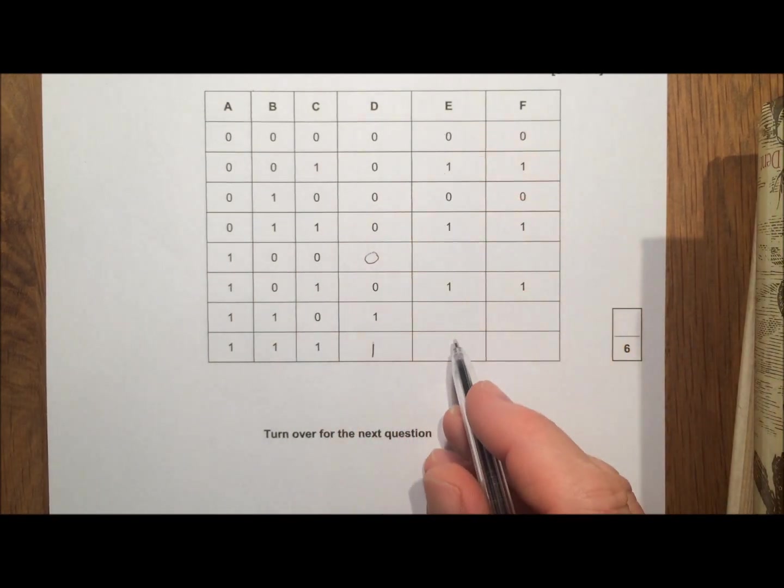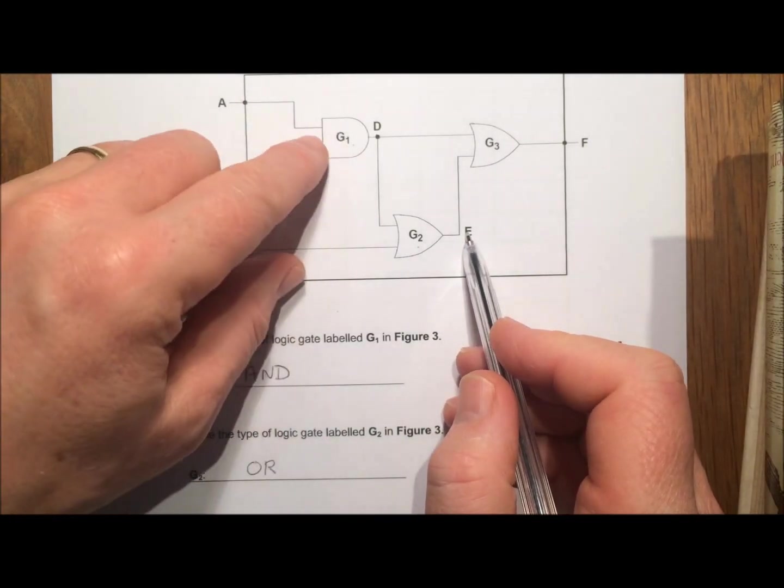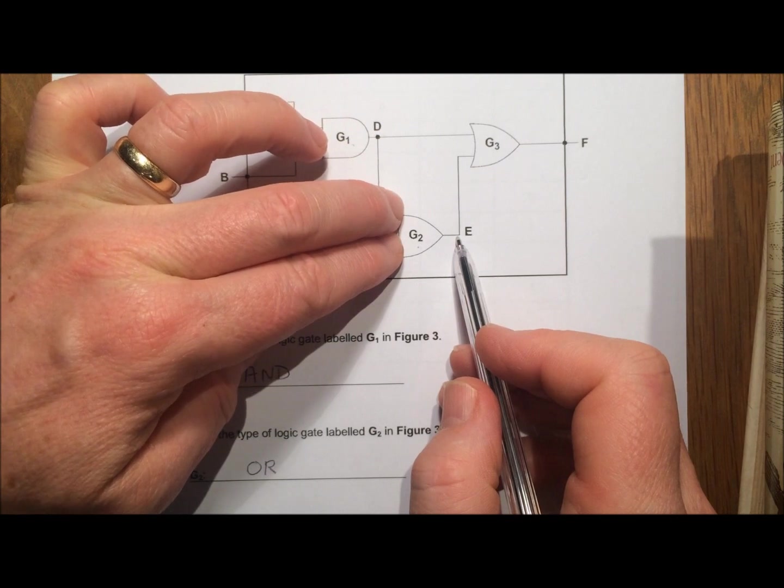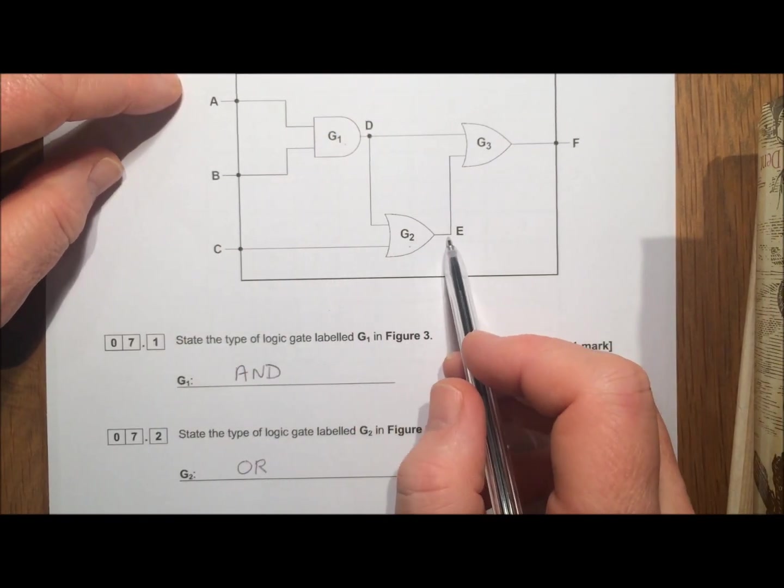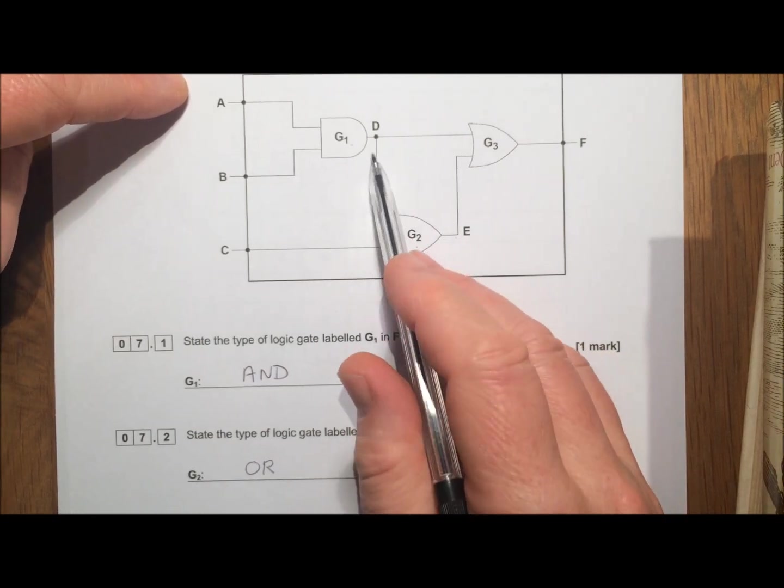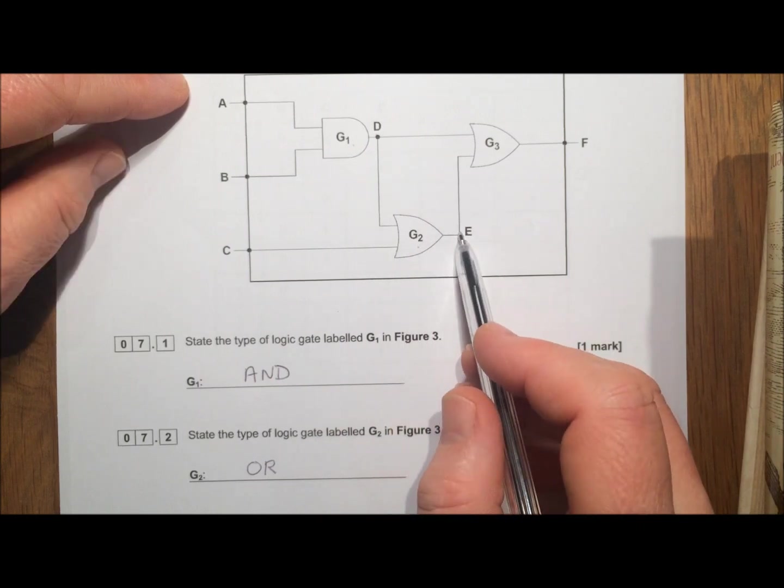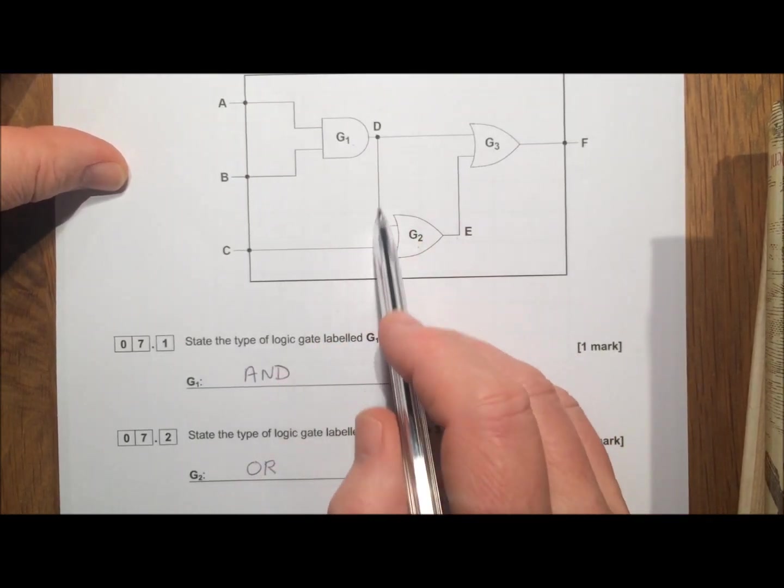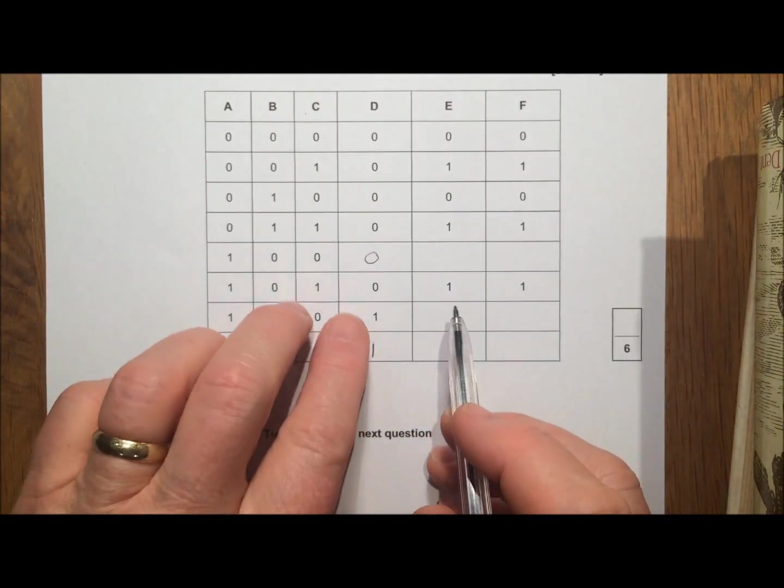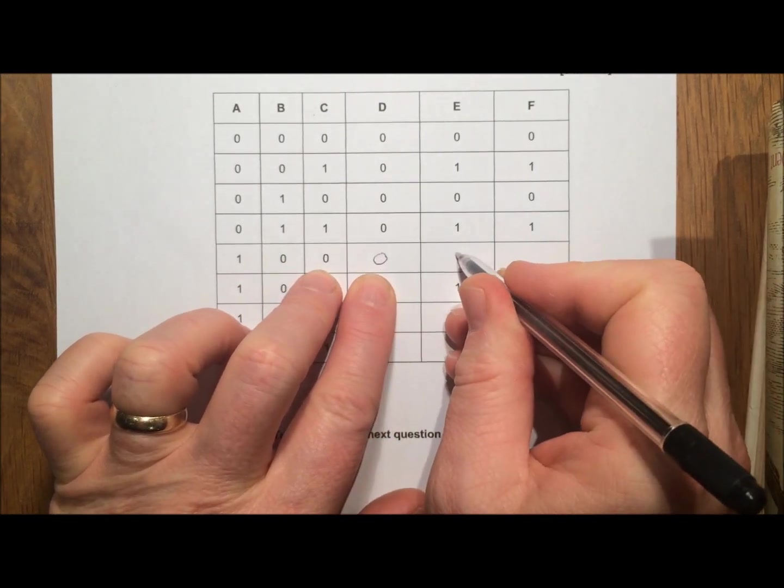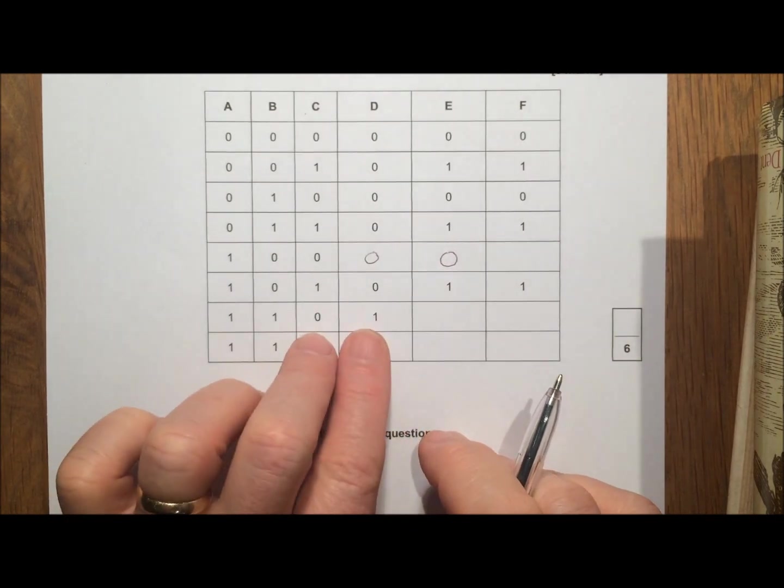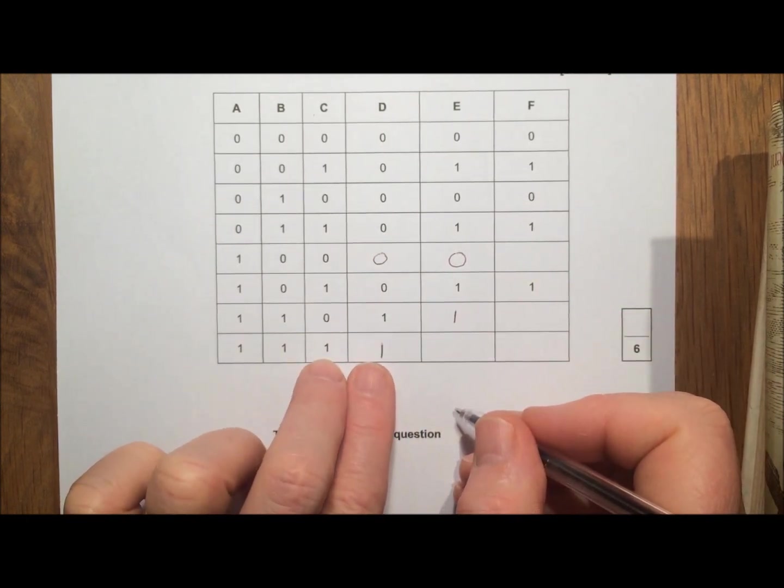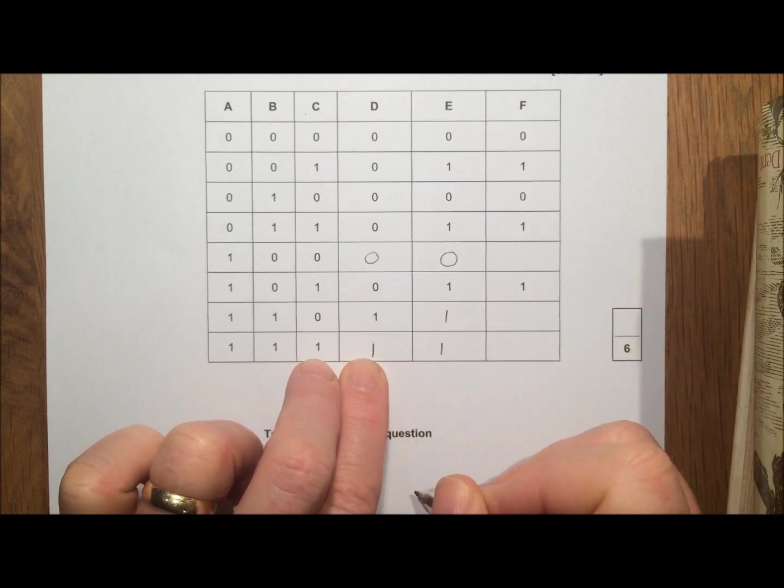Now we've got to do the output from E. So let's have a look at E. Now E takes what comes out of D and what comes in from C, so the two inputs come from D and C. Remember an OR gate will produce a 1 if either or both of these are 1. So the only time that E will be 0 is if both of these are 0. We're looking at C and D now and we're saying E will be 0 if both of them are 0, otherwise it will be a 1. So in this case C and D are both 0, so E produces 0. In this case C is 0 but D is 1, so if either of them is 1 then we produce a 1. In this case both of them are 1, so the output from the OR gate is 1.